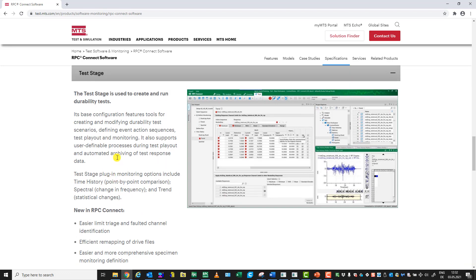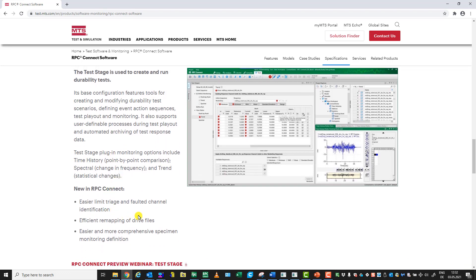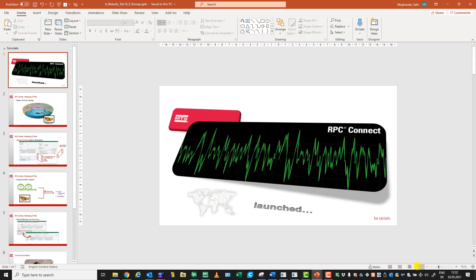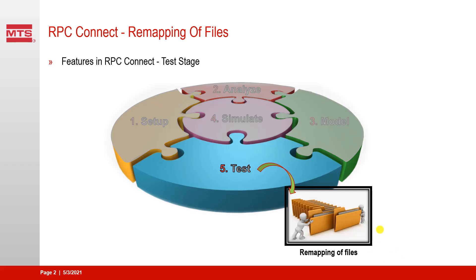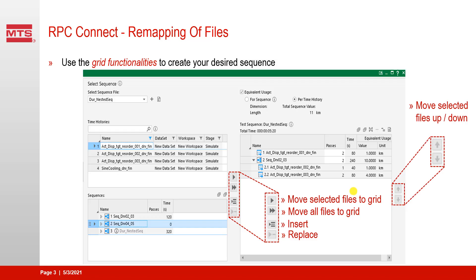The test stage offers a lot of new features, and we want to talk about the efficient remapping of drive files. In RPC Connect, we have the test stage and the possibility to reorder and remap our files. The biggest question is: when do we need that? I want to show you a brief example of where you need it and how efficiently you can resort or remap your files.